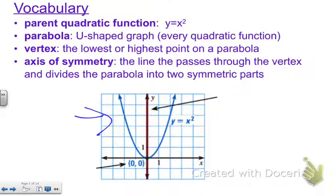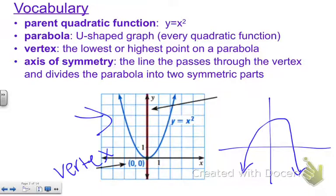The vertex is the lowest or highest point on a parabola. So down here this would be the vertex. If it was negative and it looks something like this, the vertex would be up here at the maximum. And then the axis of symmetry is the line that you can draw down the middle that divides it into two symmetric parts. So that makes it like a mirror image on both sides.